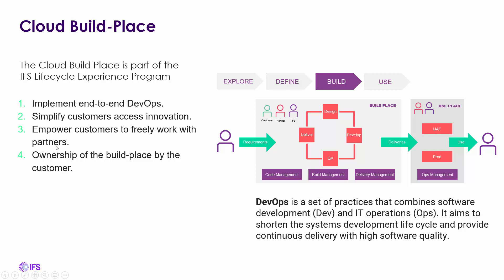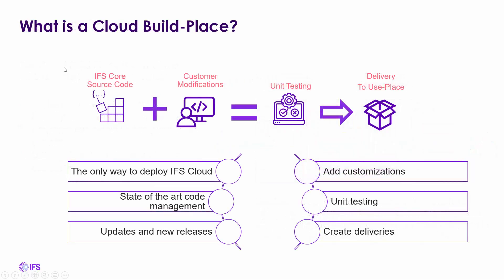The biggest thing is customers have control and ownership of the build place. The build place contains IFS source code — it's the only way to deploy the IFS Cloud version. It provides state-of-the-art code management, updates, releases, and the ability to add customizations. Many customers have relied on IFS for customizations and modifications in the past, but those are now in your control. The ability to do unit testing and control your own deliveries is now directly in customers' hands.